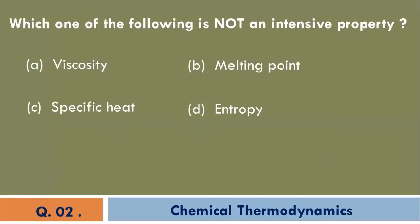Which one of the following is not an intensive property? D, that is entropy. It is not an intensive property, it is extensive property.